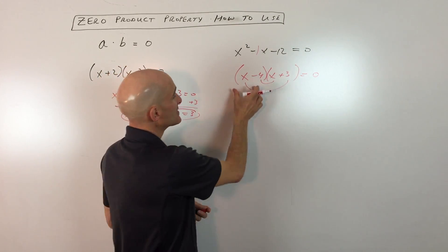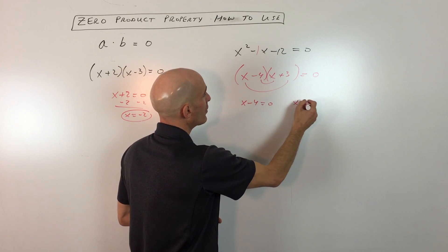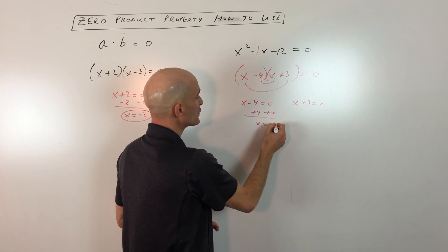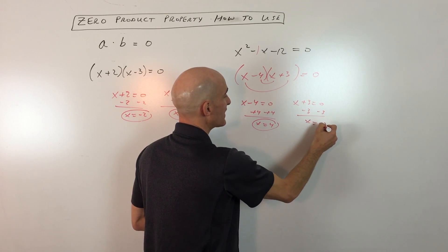So we set each group equal to zero. You have x minus four equals zero, or x plus three equals zero. If we add four to both sides, we get x equals four. Or if we subtract three from both sides, we get x equals negative three.